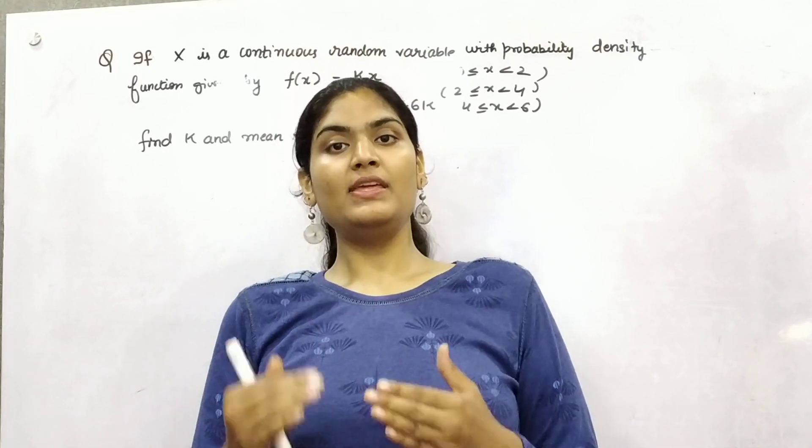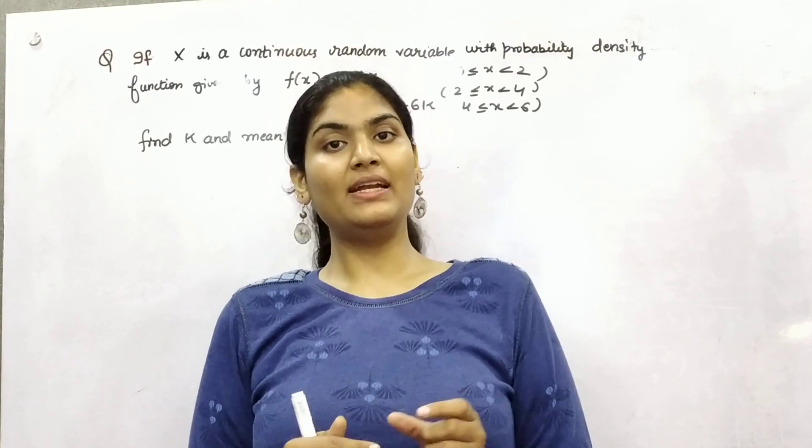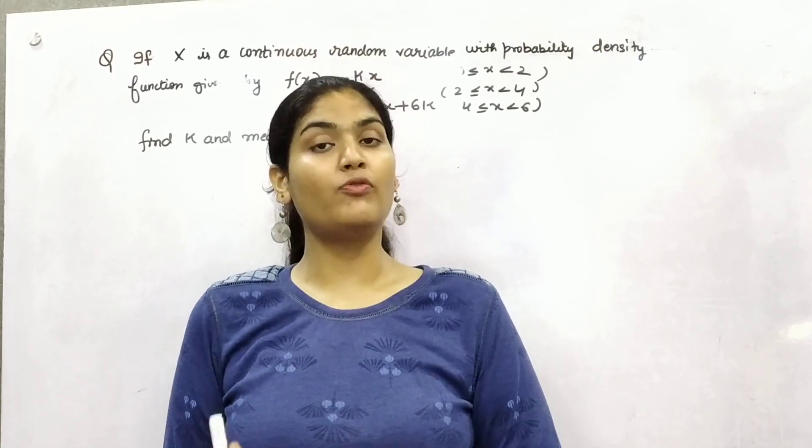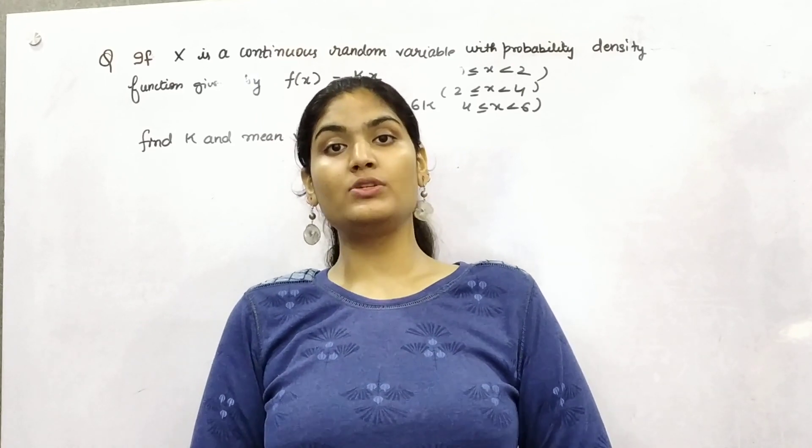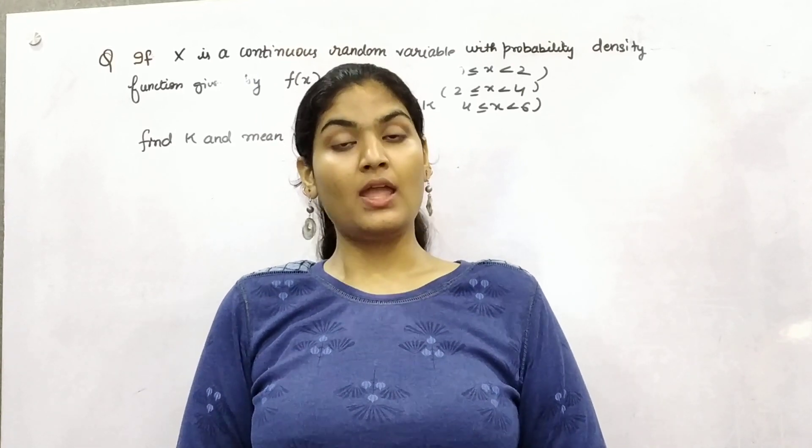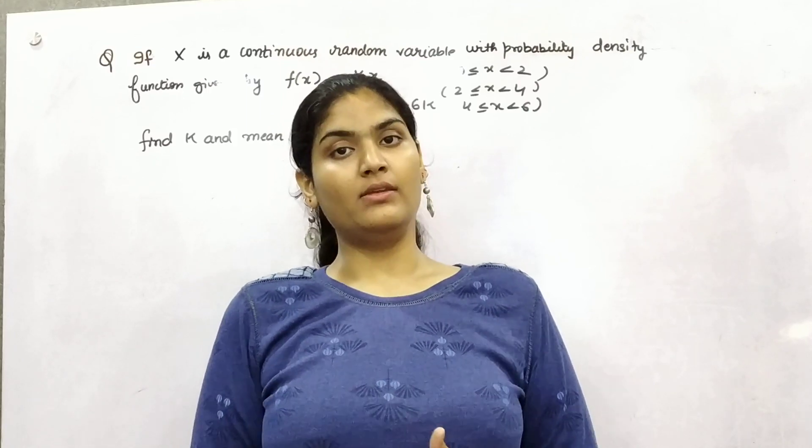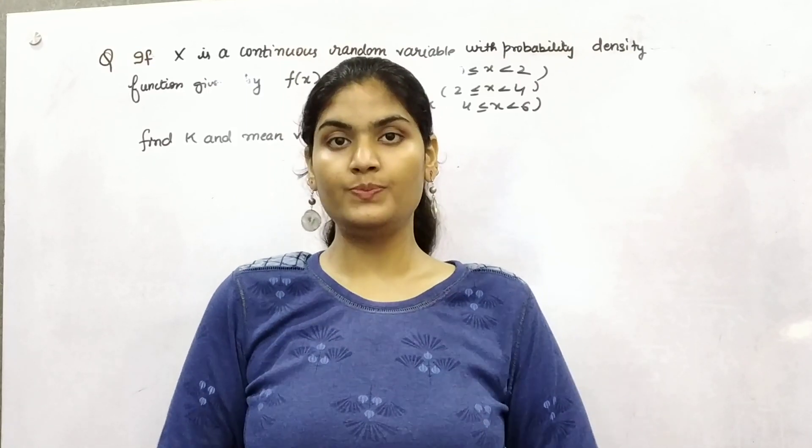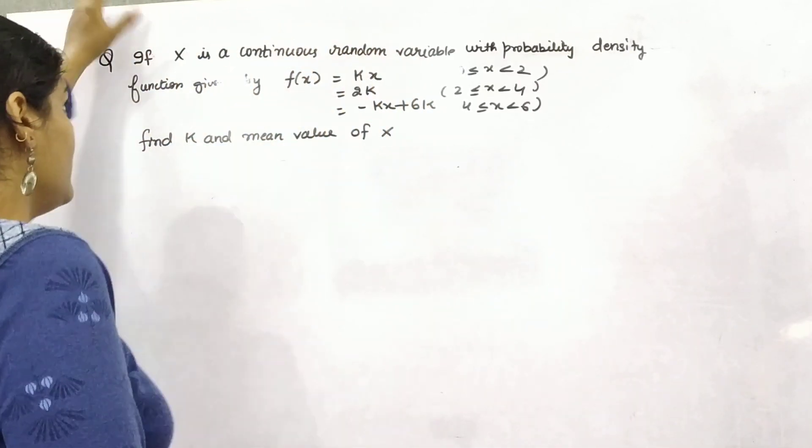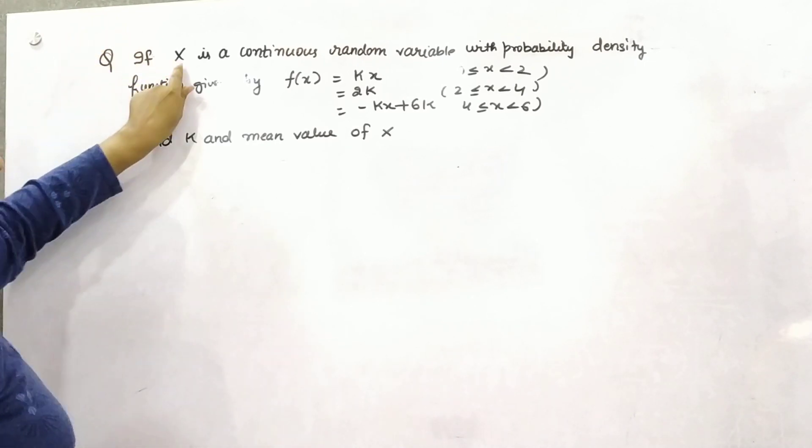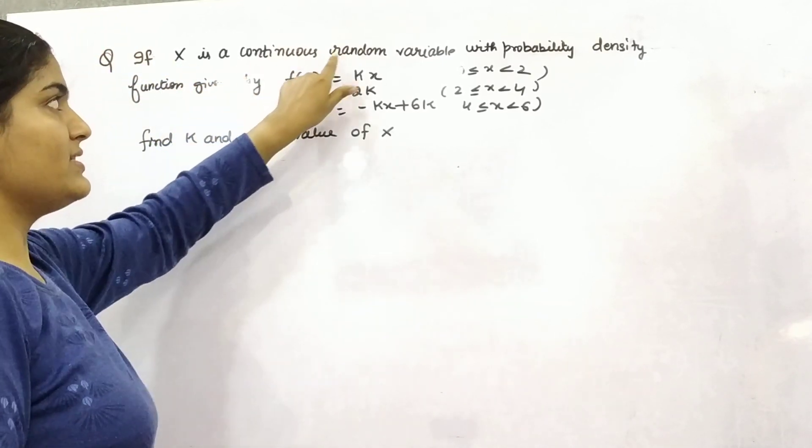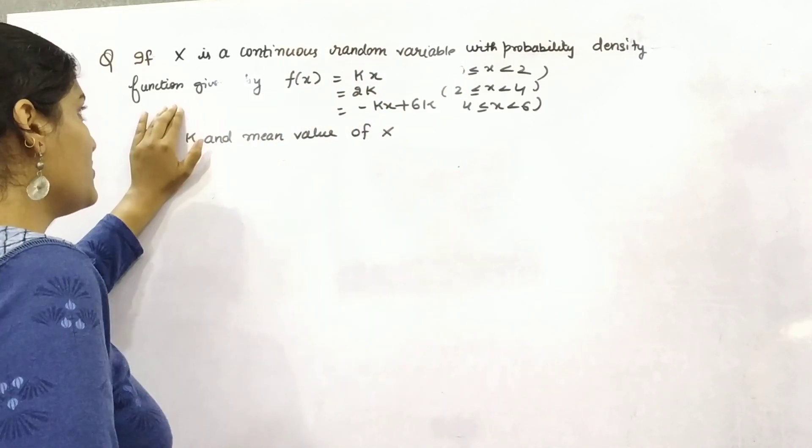What if we are given with discrete points in the form of limits and we have to find out the value of probability as well as the mean value? Let's say an example is given to you.